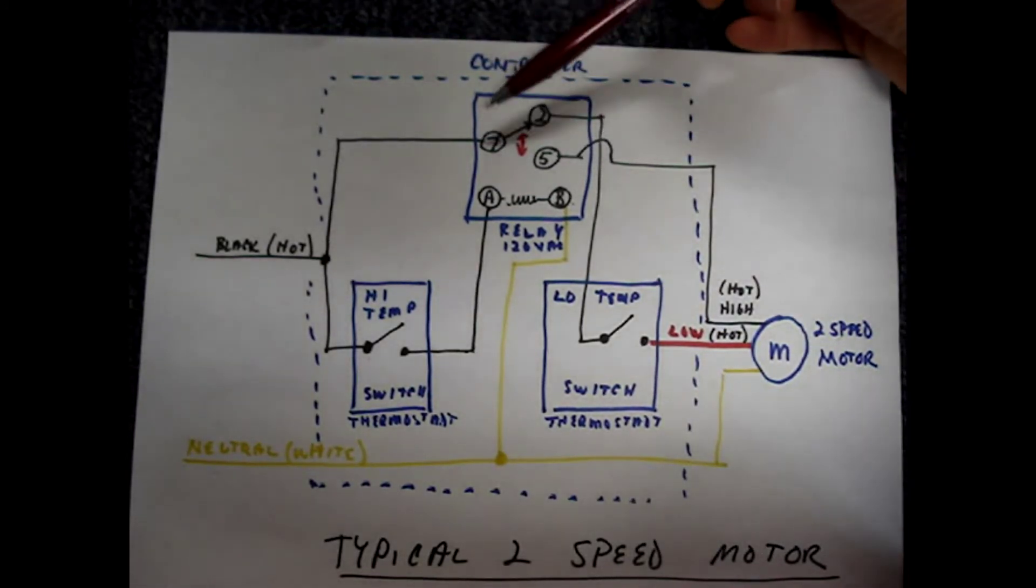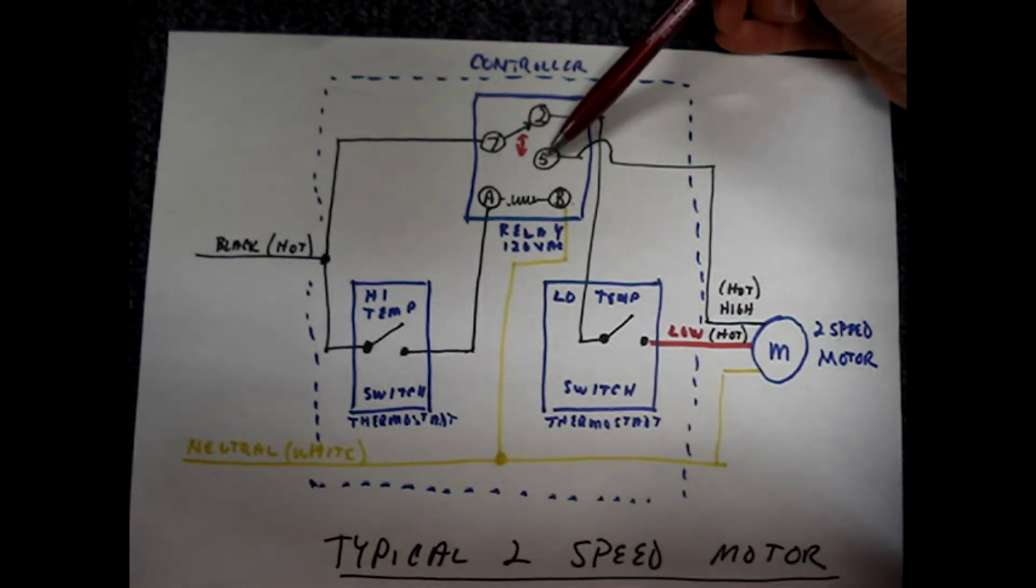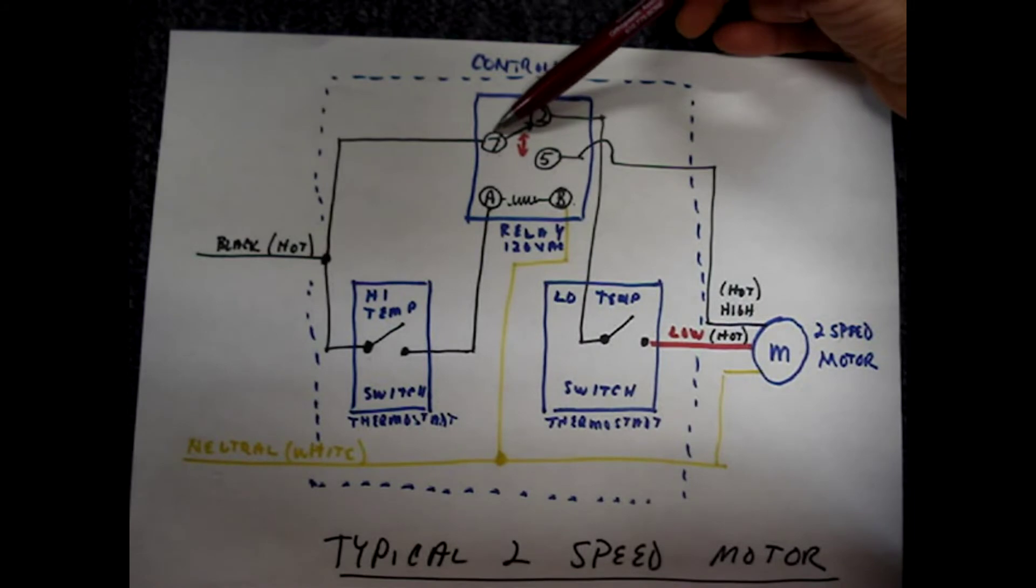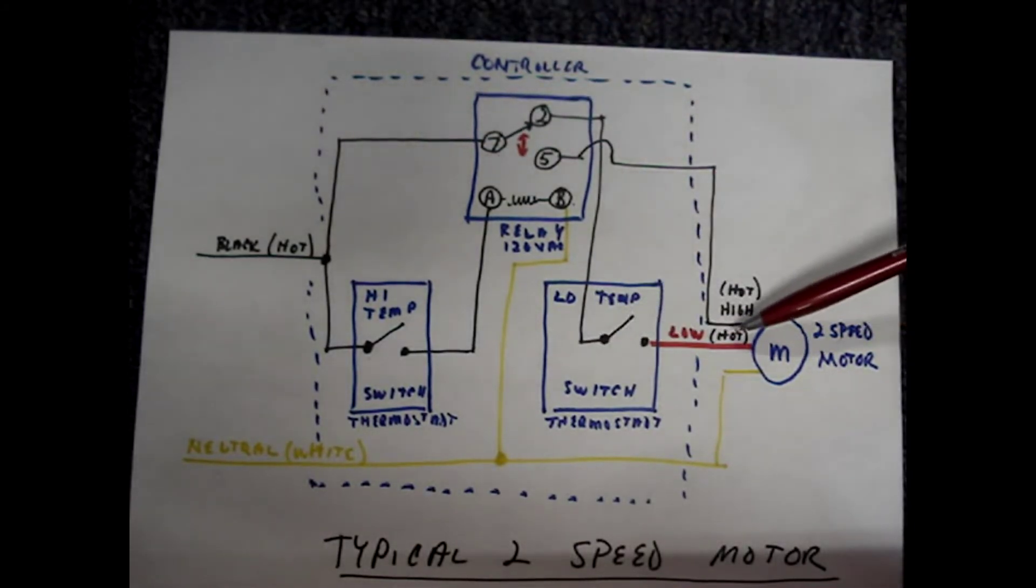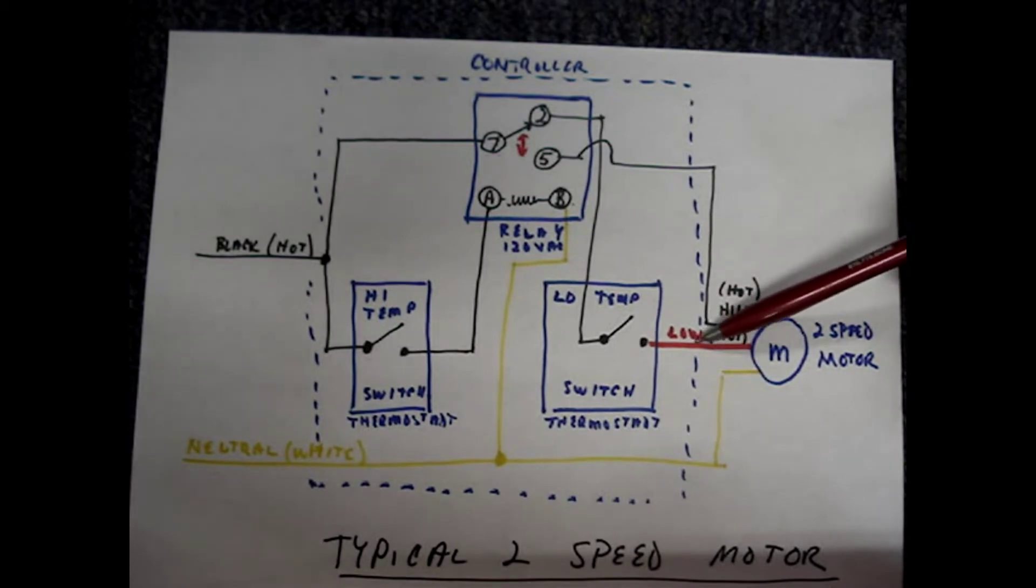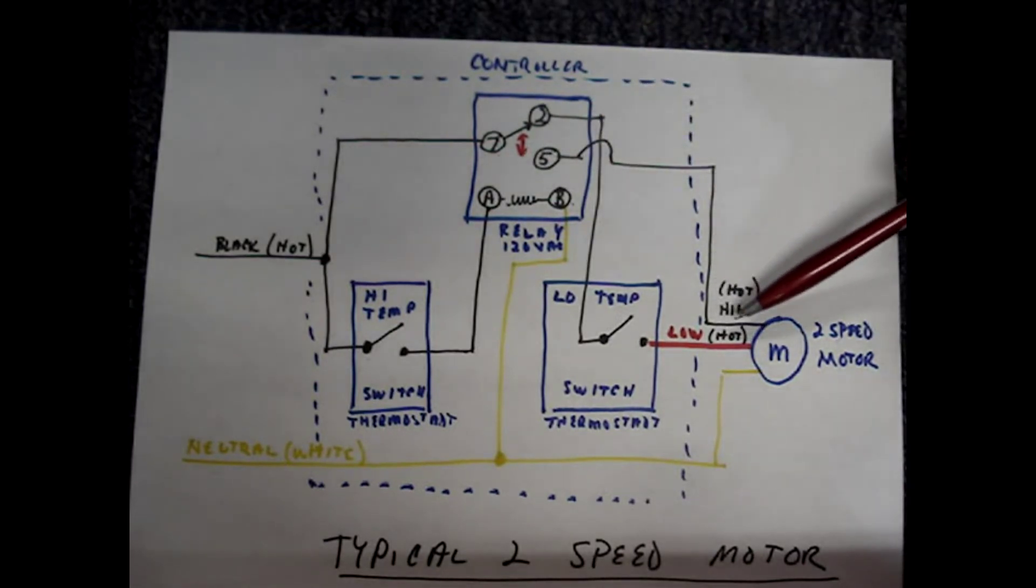Now terminals 7 and 5 are closed and 7 and 2 are open. Power is removed from the windings for low speed on the fan. It's now switched to the high speed windings and the fan runs at high speed.